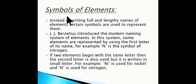Let's study symbols of elements. In chemistry, instead of writing full and lengthy names of elements, certain symbols are used to represent them. J.J. Berzelius introduced the modern naming system of elements. In this system, some elements are represented by using the first letter of its name. For example, N is the symbol of nitrogen.